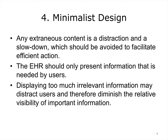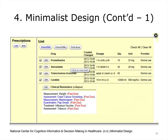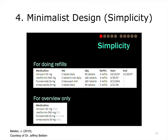The EHR should only present information that is needed by users. Displaying too much irrelevant information may distract users and diminish the relative visibility of important information. In this bad example, the user is looking for prescription information regarding a patient. This page provides this information but also presents clinical reminders of this patient. Even though the clinical reminders are important, they have nothing to do with the user's original task, which may confuse the user and slow down further actions. We can have different information formats for different purposes.